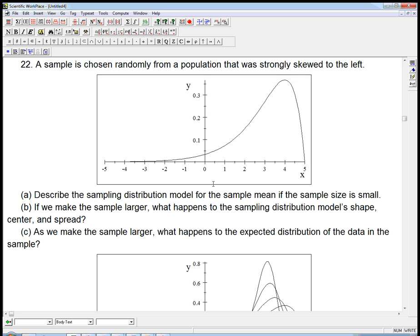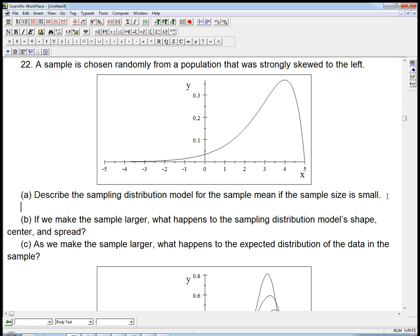So describe the sampling distribution model for the sample mean if the sample size is small. Well, if the sample size is small, it's not fully in the central limit theorem case. But we know that it's on its way there.